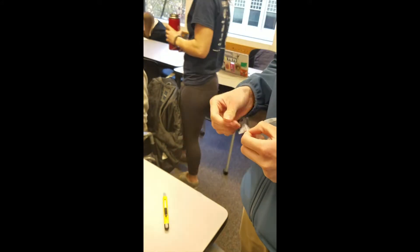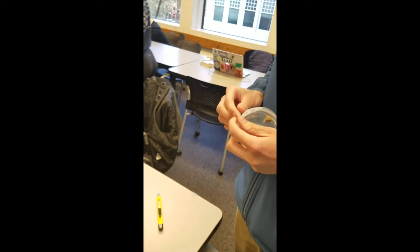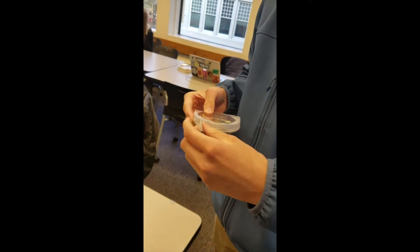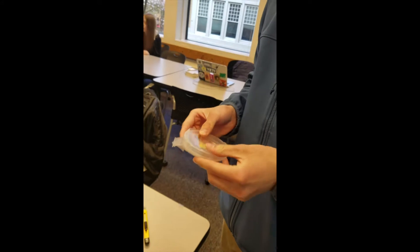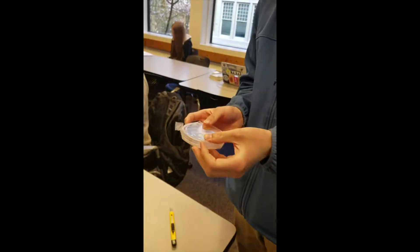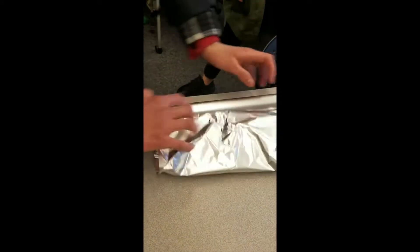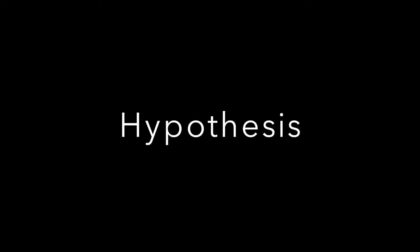We then tape it and wrap it into the aluminum foil. For this experiment, we hypothesized that the slime mold will move towards the oat flake. But let's see what it might prefer.